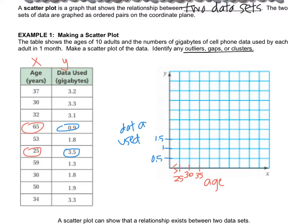We're just going to plot some points. I'll plot the first two and then you can plot the rest. The first point is 37, 3.2 — somewhere over here. With scatter plots you won't always land on a perfect intersection, so you just estimate. Then I have 33, 3 — that's pretty much right near it.